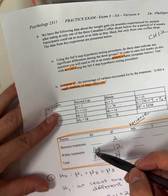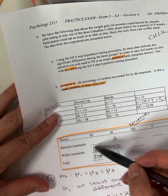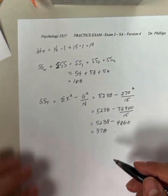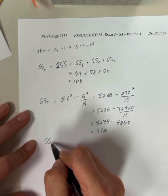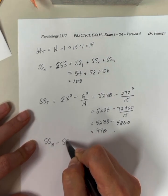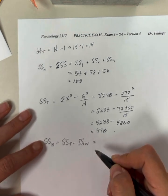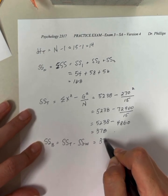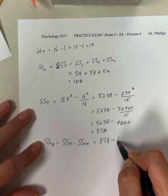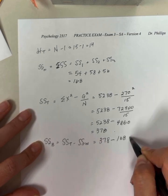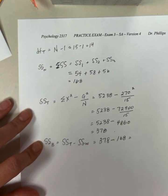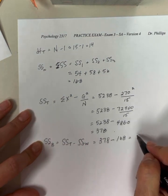So now I can use these two sum of squares to figure out my between subjects sum of squares. I'm going to take the sum of squares total, subtract sum of squares within, and I will get my sum of squares between. So I can take 378, subtract 168, and that's 210.